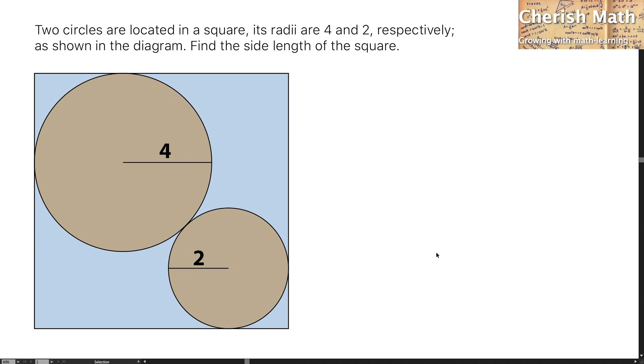Hi from Cherish Math, and this is the question. Two circles are located in a square. Its radii are 4 and 2 respectively. As shown in the diagram, find the side length of the square.